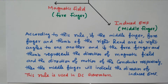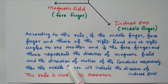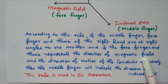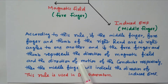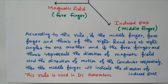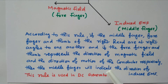In a DC generator, EMF will be induced. When the magnetic field is applied and the conductor starts rotating, the EMF is induced. The direction of magnetic field and direction of rotation are indicated by the forefinger and thumb, while the induced EMF is indicated by the middle finger. So Fleming's right-hand rule is used in DC generators.